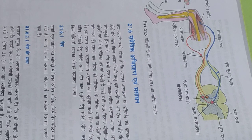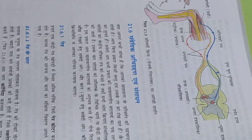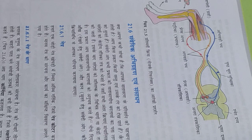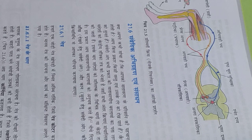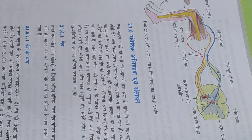In the body of an animal, two types of activities take place: voluntary actions and involuntary actions. Voluntary actions happen according to the will of the individual, while there is no control of will over involuntary actions.